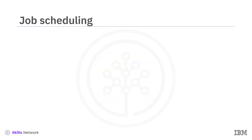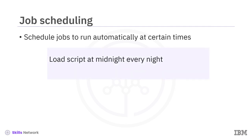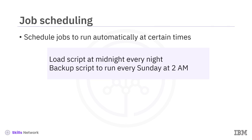Whether you're a system administrator, a data engineer, or even a developer, there may be times when you want to schedule certain jobs to run automatically at certain times. For example, you may want to schedule a load script to run every day at midnight and a backup script to run every Sunday at 2 a.m.